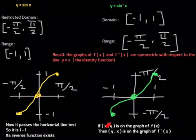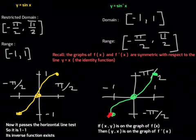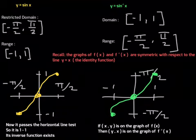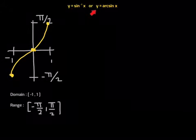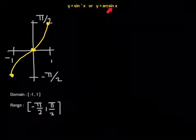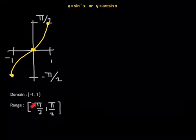That would be the graph of y equals inverse sine of x. All we did was get the domain and range from sine of x, swap the coordinates, and get the mirrored image with respect to the line y = x. Just for notation purposes: if you don't want to write it as inverse sine of x, you can write it as y equals arc sine of x — arc sine of x is just another way of saying inverse sine of x, both mean the same thing. The domain is from negative 1 to 1, and the range — very important — is from negative pi over 2 to positive pi over 2.